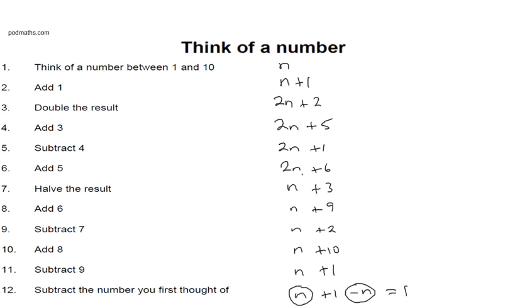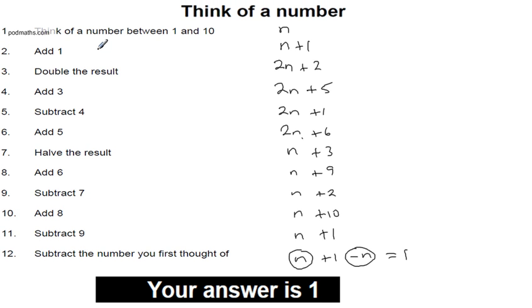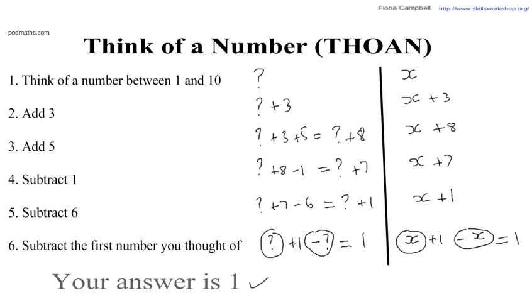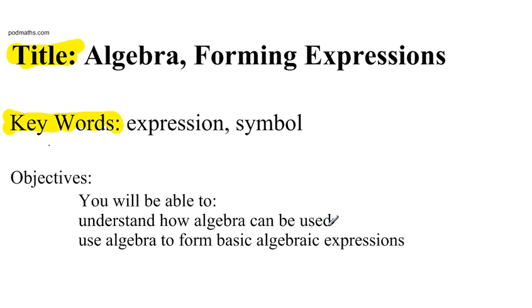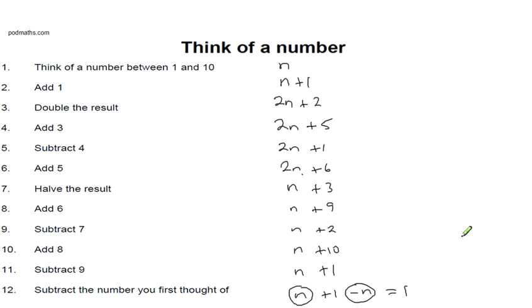Let's just check that — and indeed your answer should have been 1. No matter what number you pick between 1 and 10, if you go through those operations the final answer should always be 1. Looking back at our objectives: we said we would understand how algebra can be used — we gave an example using the think-of-a-number activity to show how algebra represents an unknown, and that basically is what algebra is for. The second objective was to use algebra to form basic algebraic expressions — we did that, looking at the two keywords: symbol, and in maths the symbols we use are letters; and expressions. And that's the end of the lesson.